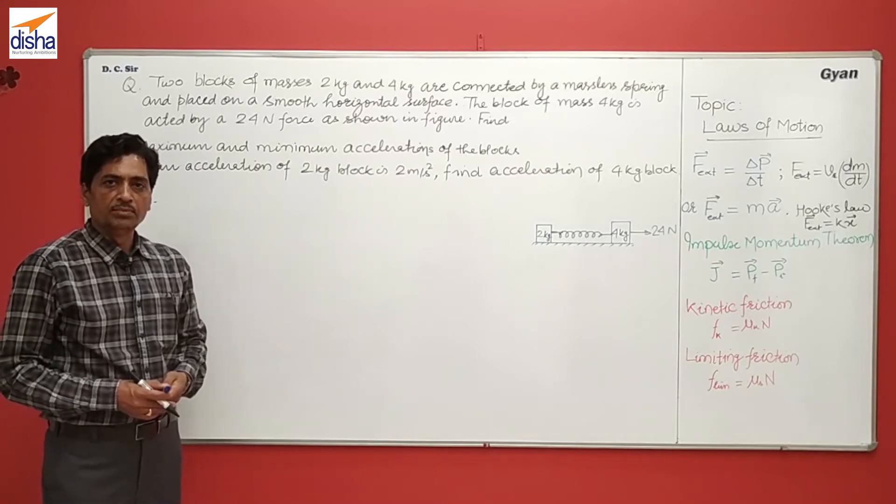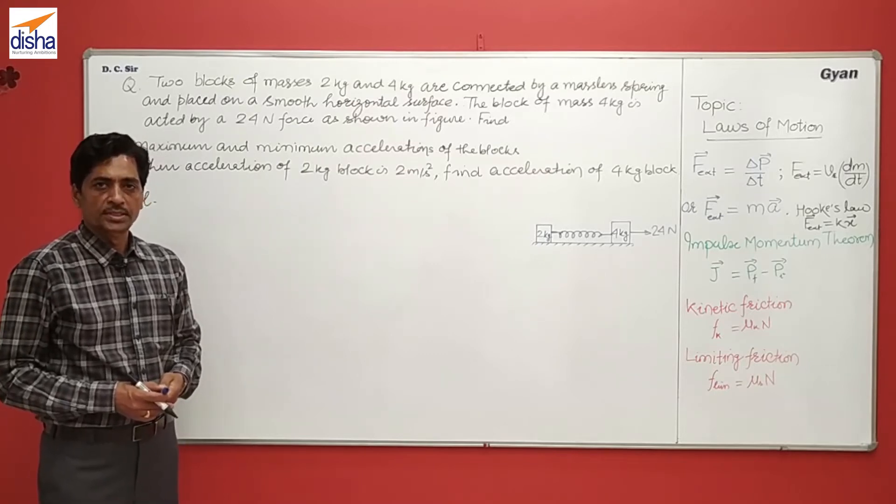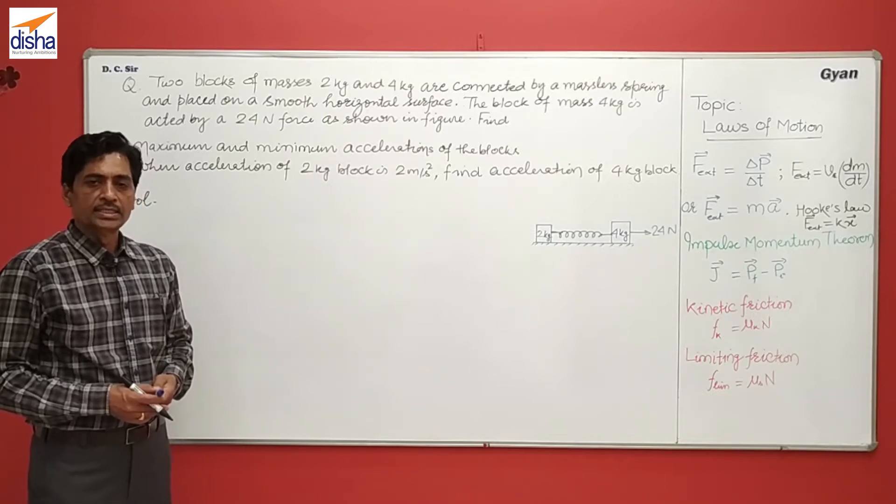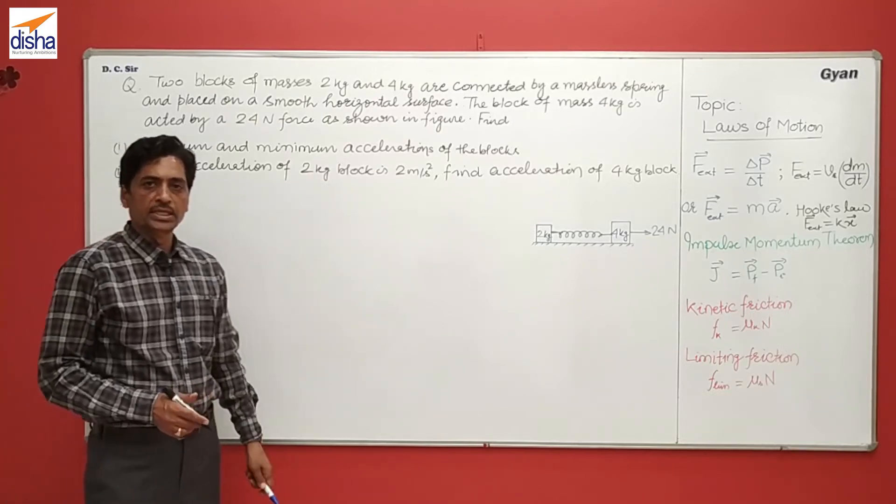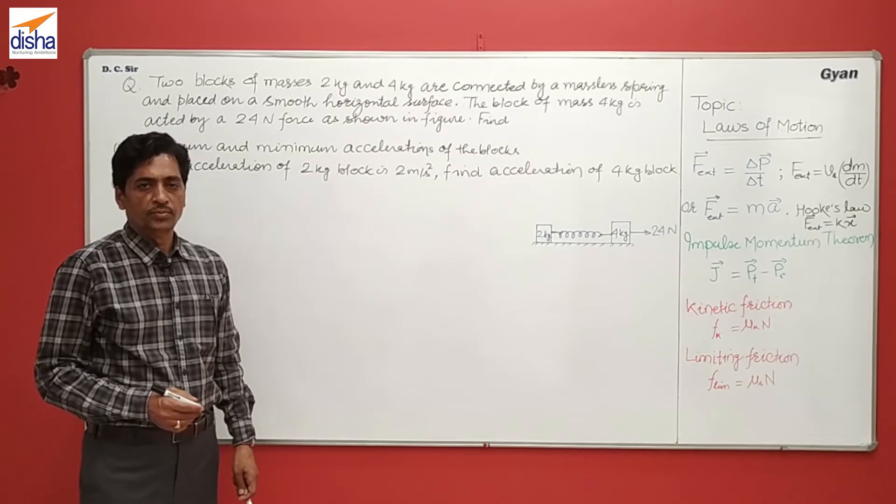Find the maximum and minimum acceleration of the blocks, and when the acceleration of the 2 kg block is 2 meter per second squared, find the acceleration of the 4 kg block.